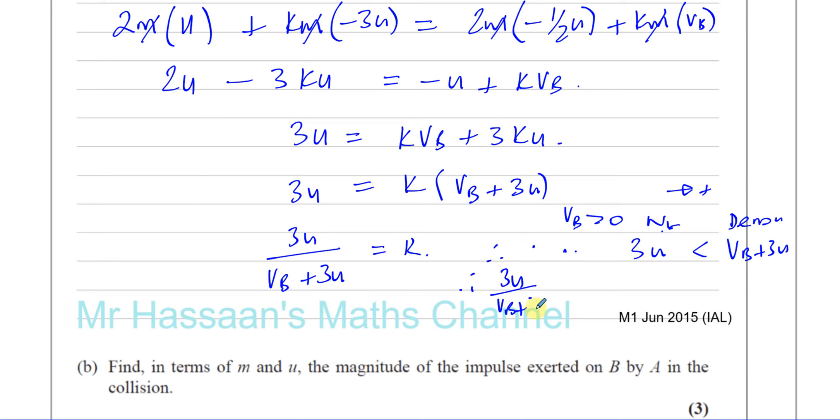Because this is 3U and this is greater than zero, then this is 3U plus something positive, which is going to be more than this. So the numerator is less than the denominator. So 3U over VB plus 3U must be less than one. Because you're going to have something which is less over something which is bigger. Therefore, K must also be less than one.